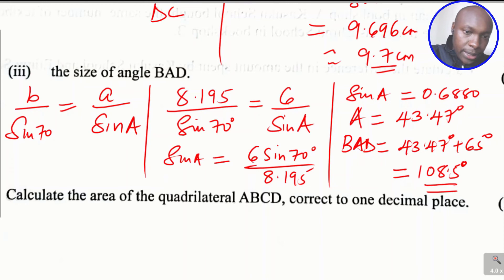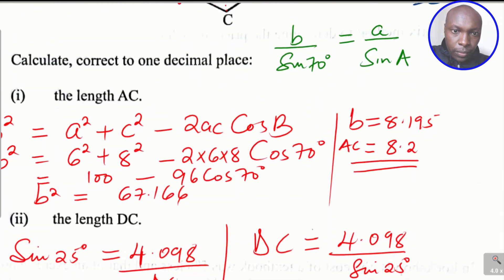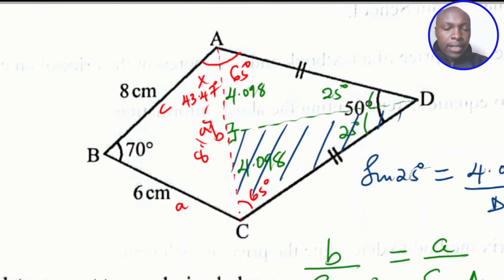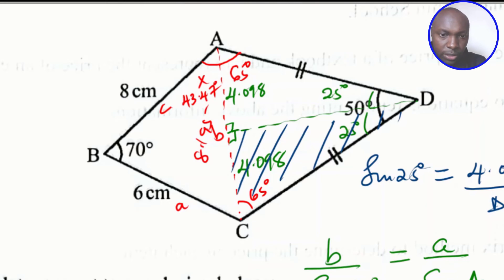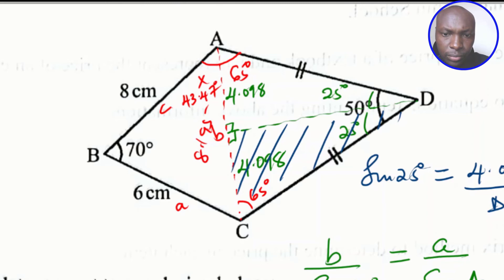The last part asks us to calculate the area of quadrilateral ABCD correct to one decimal place. The quadrilateral has been divided into two triangles: triangle ABC and triangle ACD. We find the area of each and add them. For both we can use the formula: half times the product of two sides times the sine of the included angle.